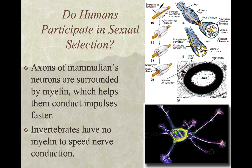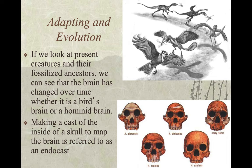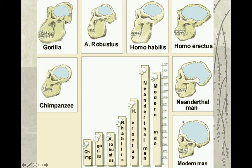Axons of mammalian neurons are surrounded by myelin, which helps them conduct impulses faster. Invertebrates have no myelin to speed nerve conduction. If we look at present creatures and their fossilized ancestors, we can see the brain has changed over time, whether it's a bird's brain or a hominid brain. Making a cast of the inside of the skull to map the brain is referred to as an endocast. These are all the proto-humans: Neanderthal man, Homo erectus, Homo habilis, Afarensis, Robustus, the modern gorilla, and the modern chimpanzee. From this chart, the Neanderthal man has the largest brain of all hominids that have ever existed.